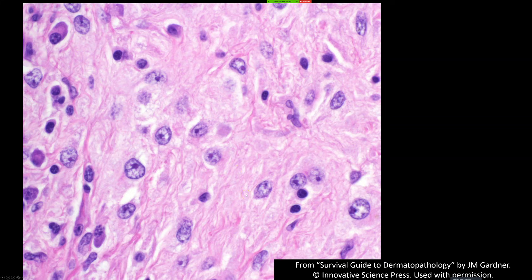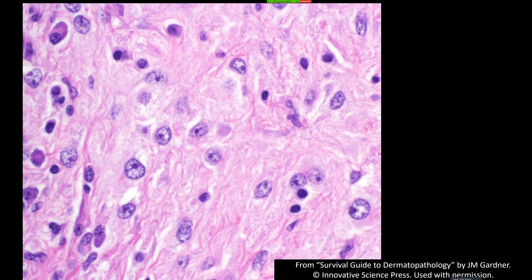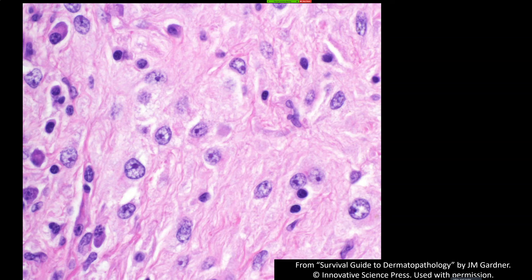Emperipolesis is the buzzword, but it's really the icing on the cake — the morphology I described is what I use to make the diagnosis. Emperipolesis refers to lymphocytes, plasma cells, other white blood cells, or even sometimes red cells inside little vacuoles in the cytoplasm of the histiocytes. The thing is, it takes forever to hunt around a case to find a picture this good — most cases do not have really perfect emperipolesis in my experience.